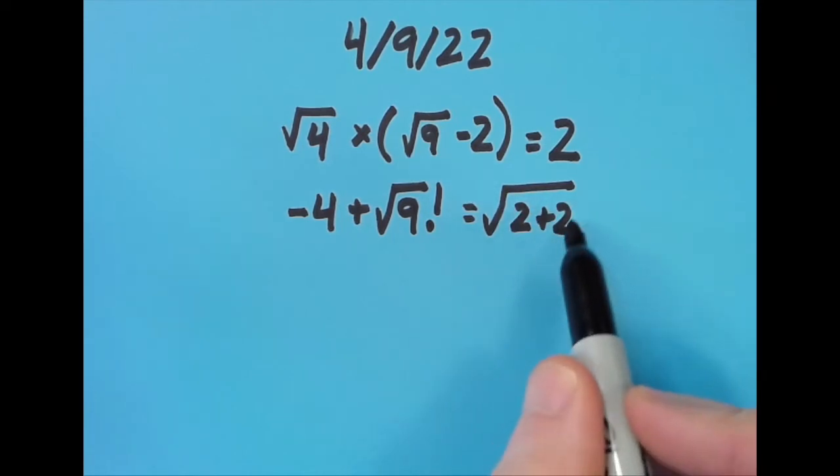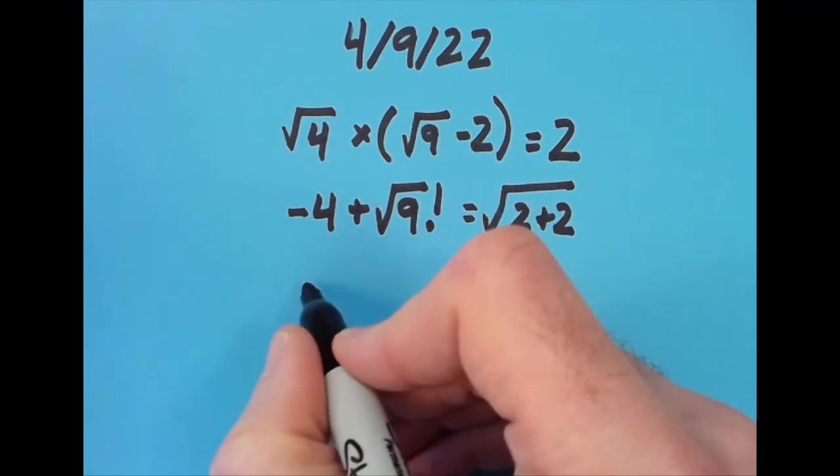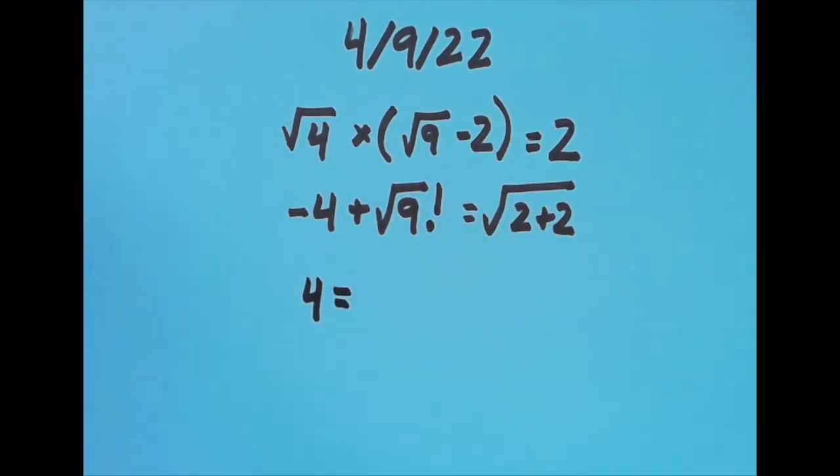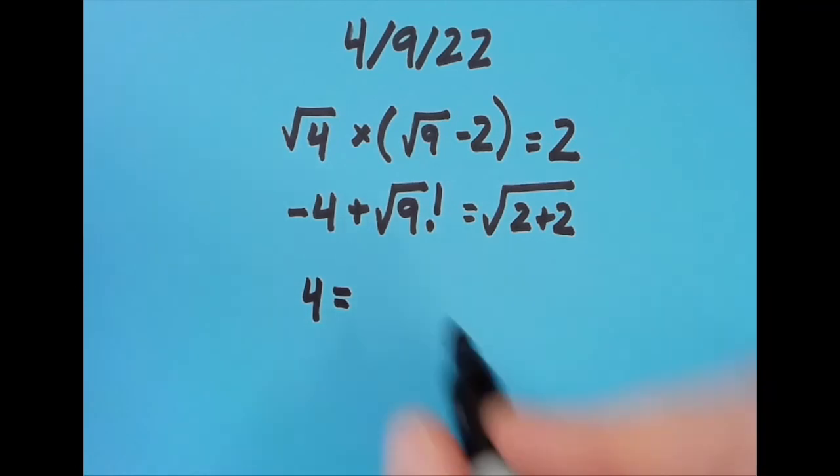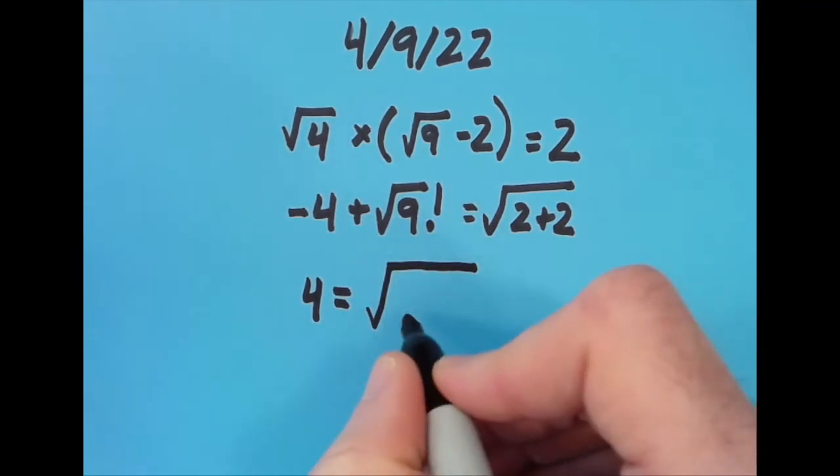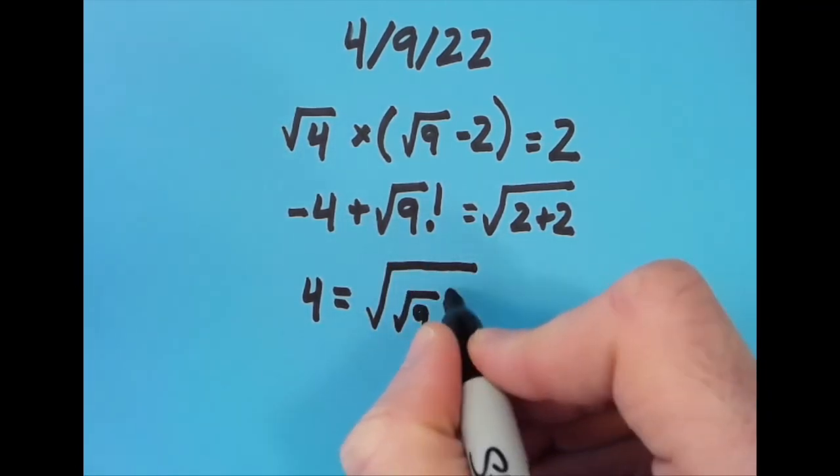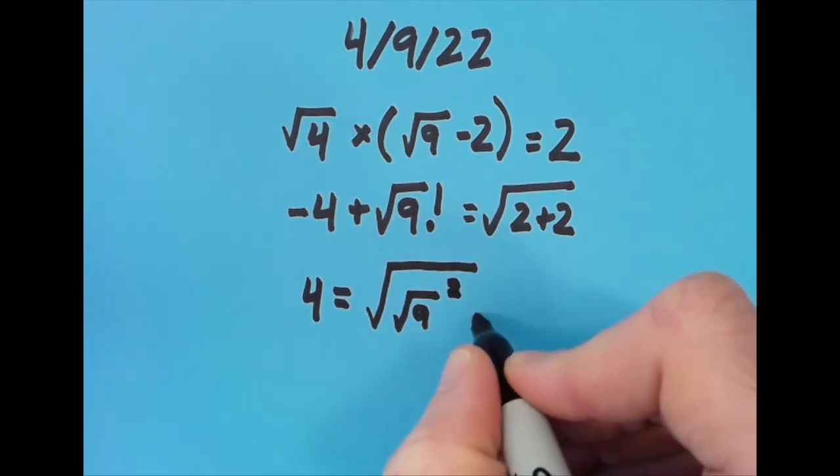Then I had some fun. I put the equal sign in the first position and said 4 = √(√9²)! - 2. So let's see what we have here.